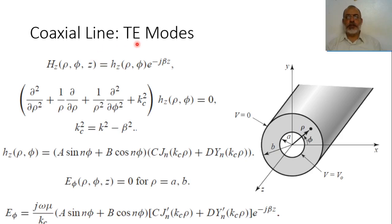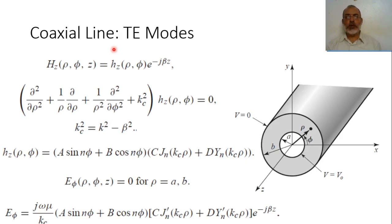In the previous video, we solved the problem of coaxial transmission line for the transverse electromagnetic mode. The transverse electromagnetic mode is characterized by a cutoff frequency of zero, meaning the coaxial transmission line can support TEM mode starting from DC. However, coaxial transmission line can also support transverse electric and transverse magnetic modes. In this video, we are going to study the transverse electric modes inside coaxial transmission line.